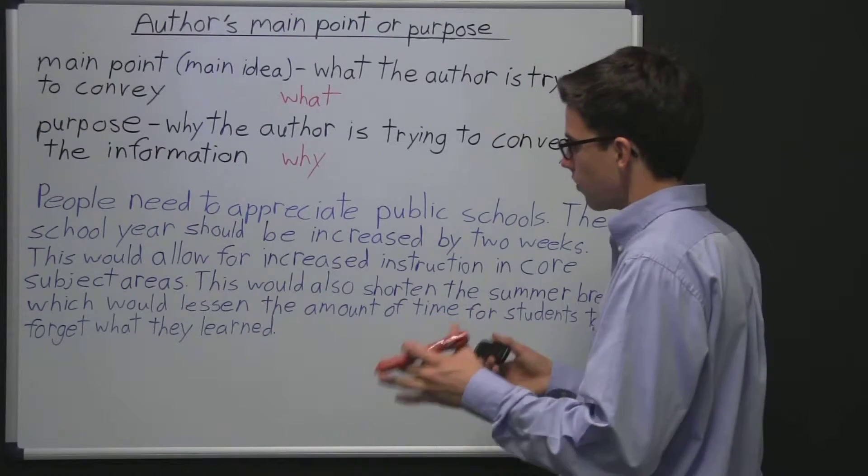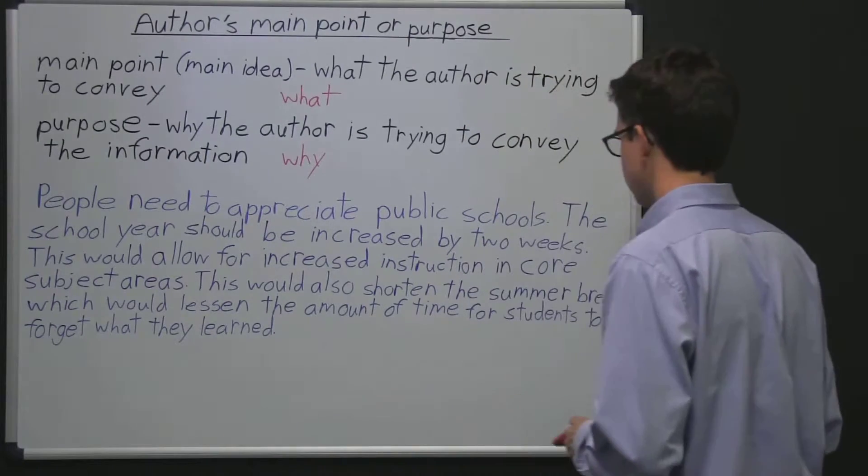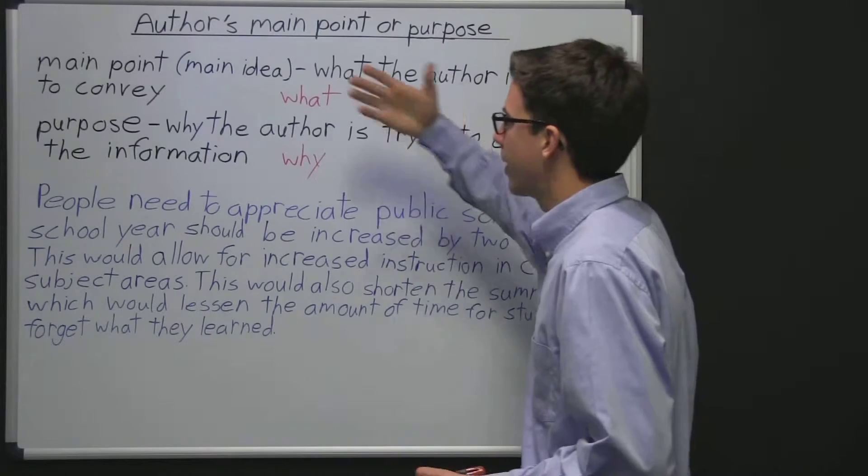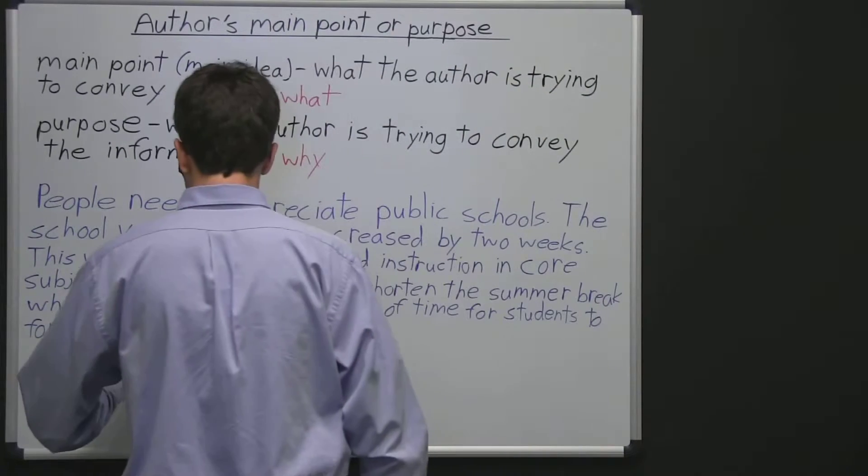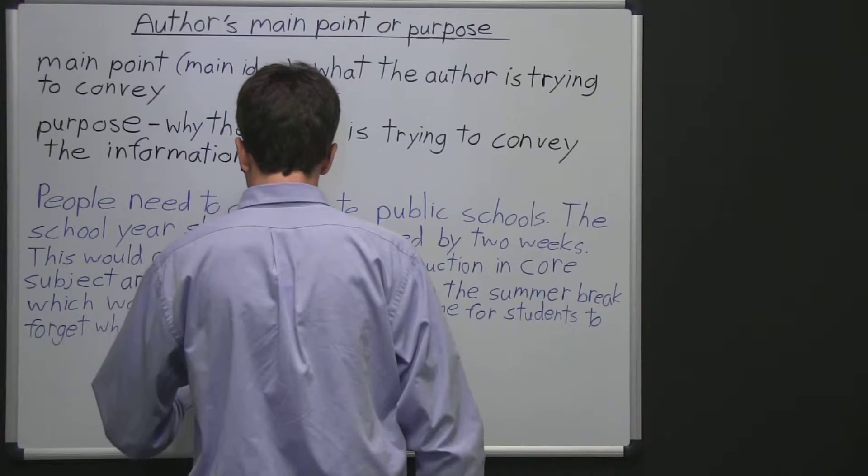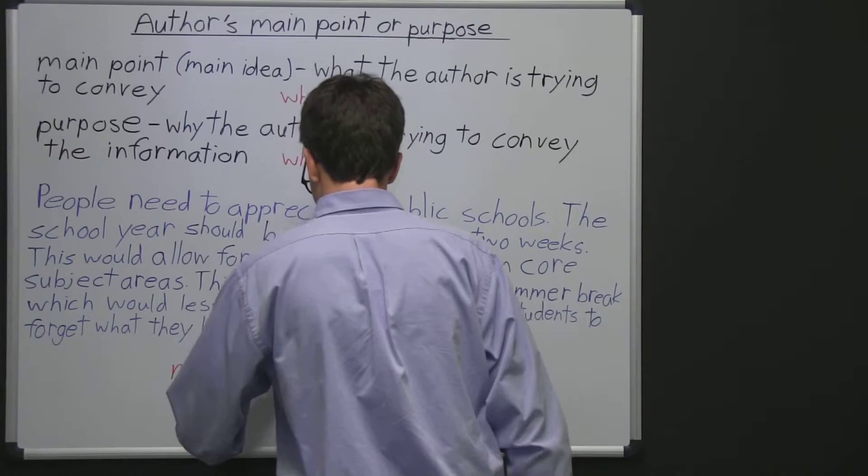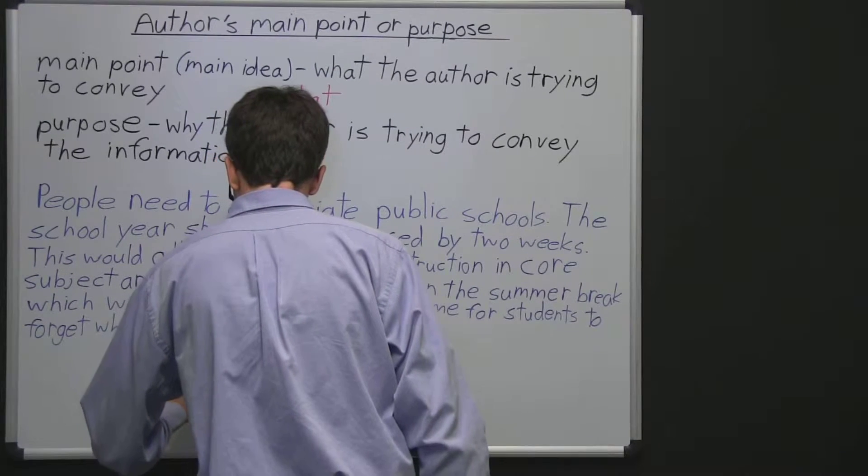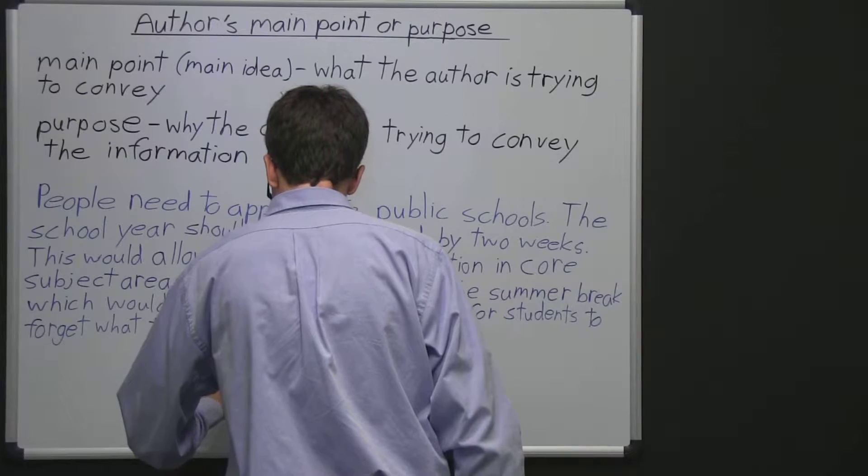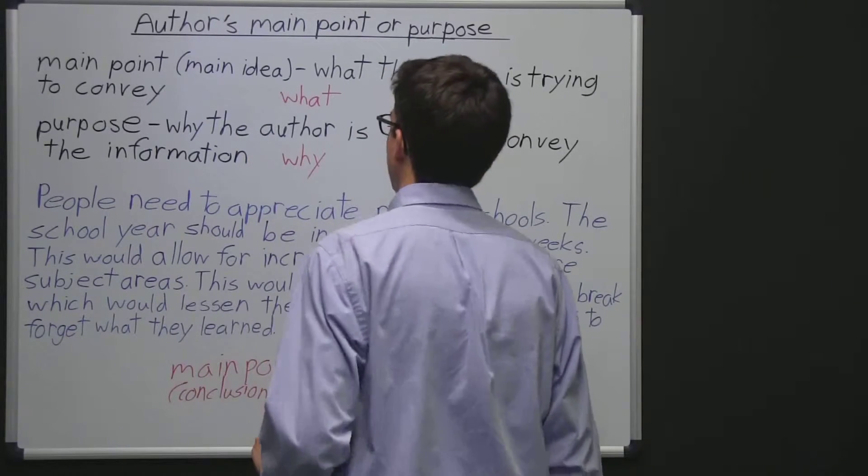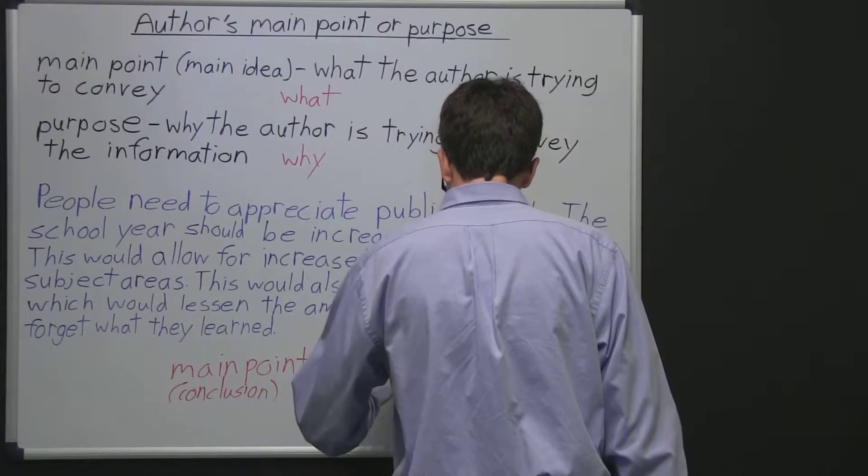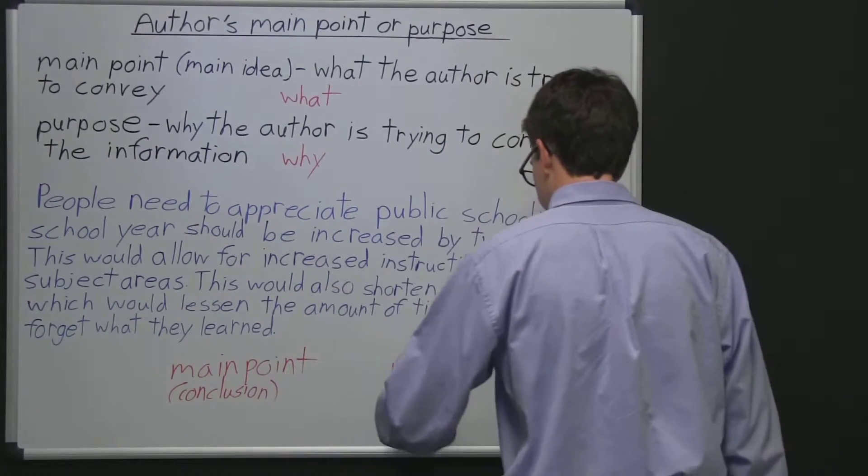So this first sentence here says people need to appreciate public schools. So could that be a conclusion or a main point? Another word for main point is a conclusion. So we have main point, and then I'll put in parentheses here, conclusion. And then we have premises that back up a main point. This is basically the evidence or the reasons behind that main point.